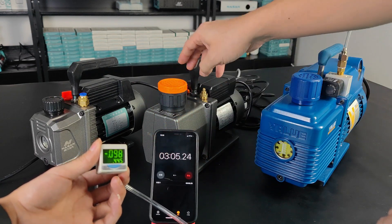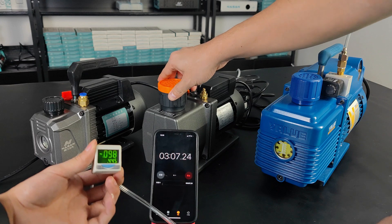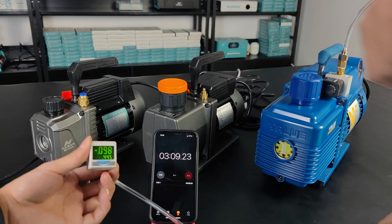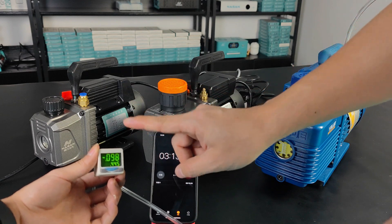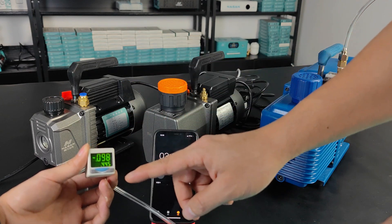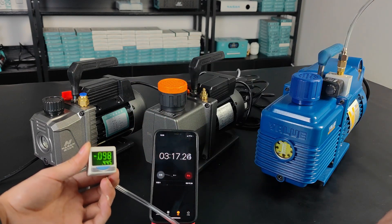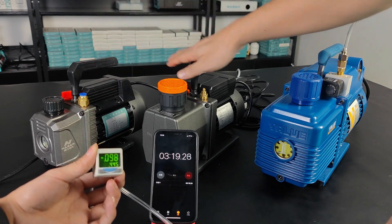Some vacuum pumps in the market, if they're not especially for laminating, the value might go up or down a little bit. If you want to buy a professional one, buy it from us.